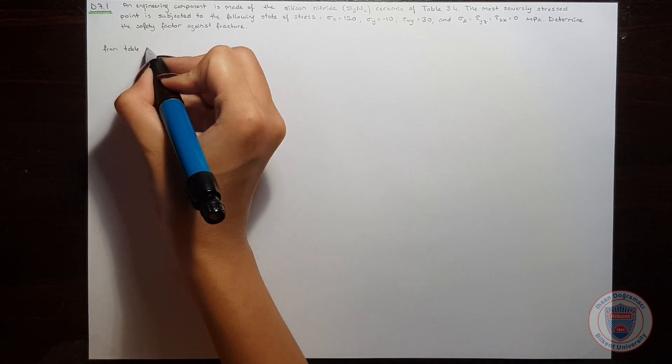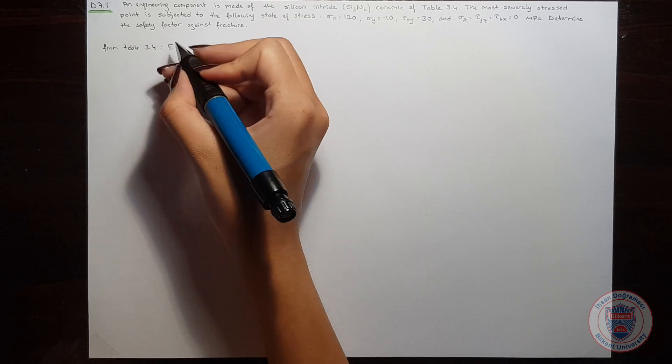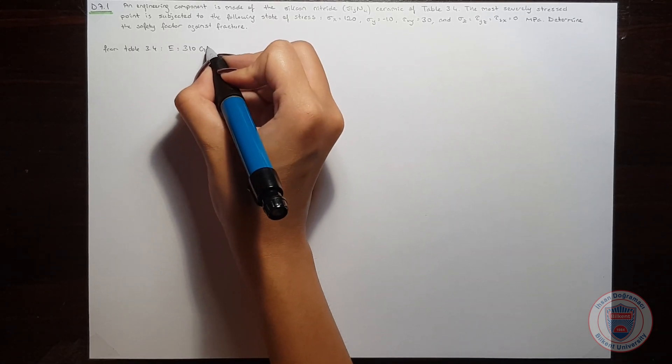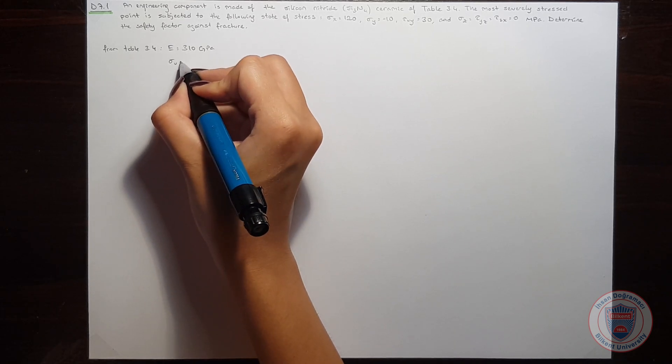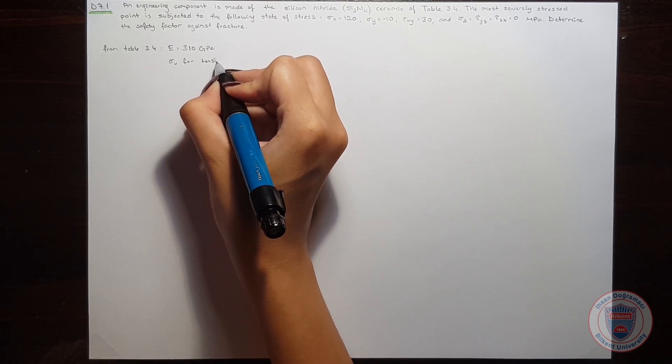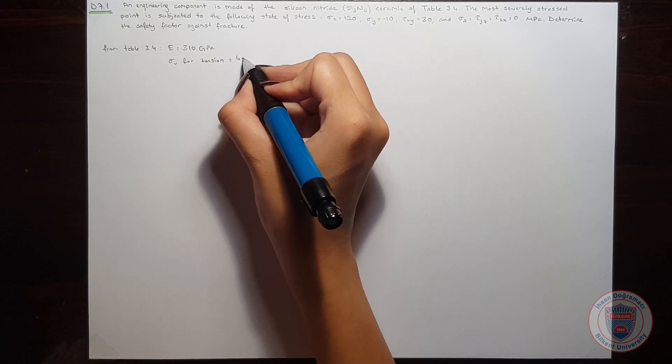From table 3.4, we obtain Young's modulus as 310 GPa and sigma u for tension as 450 MPa.